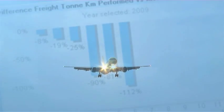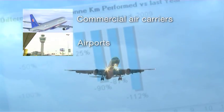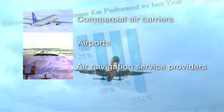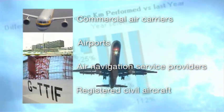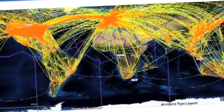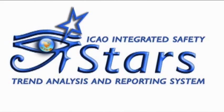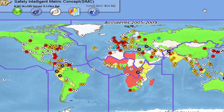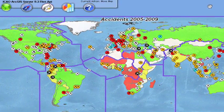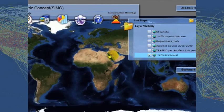The statistics collected cover four main categories: commercial air carriers, airports, air navigation service providers, and registered civil aircraft. Air travel safety data are analyzed and reported on the Integrated Safety Trend Analysis and Reporting System, I-Star. It contains detailed accident and incident data, aviation safety audit results, and traffic information.